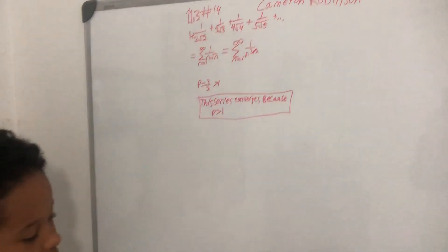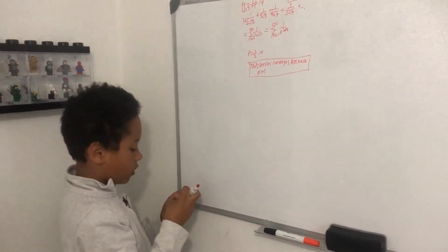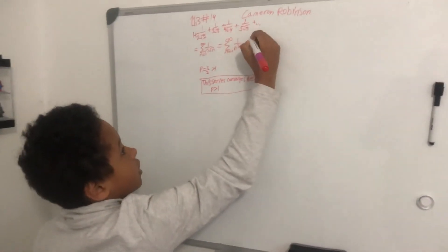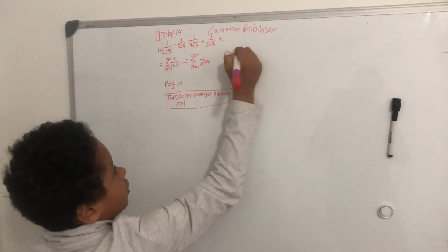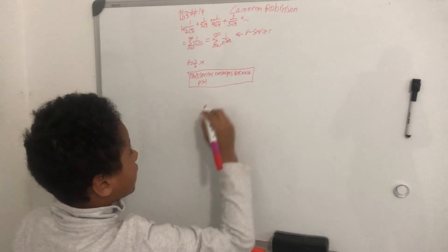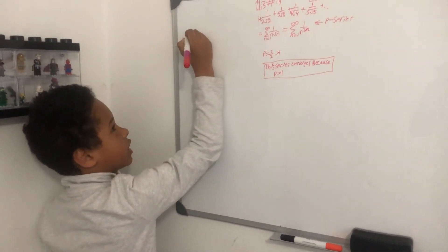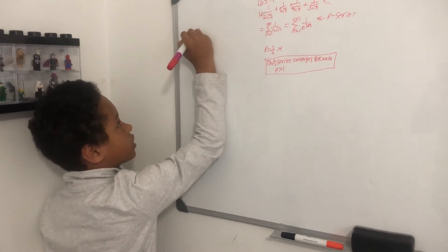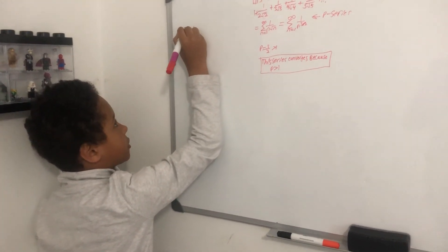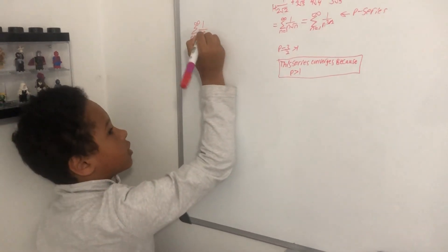Now we know that this term right here is a p-series and the p-series rule is a p-series if it's in the form of the series from n equals 1 to infinity of 1 over n to the p.